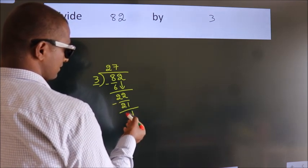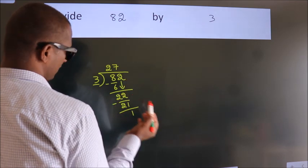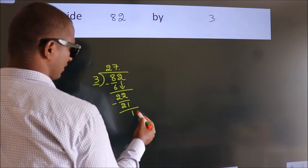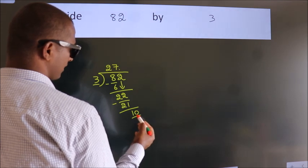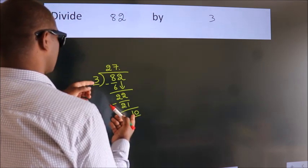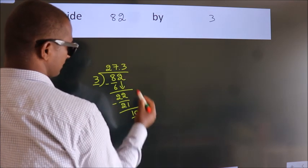After this, no more numbers to bring down. So what we do is, we put a dot, take 0, so 10. A number close to 10 in 3 table is 3 3s, 9.